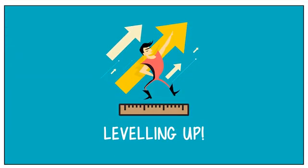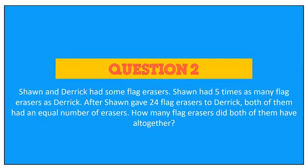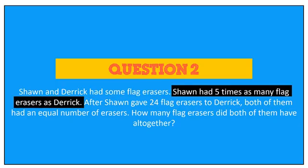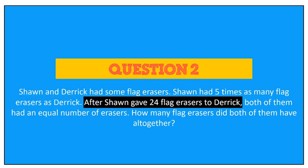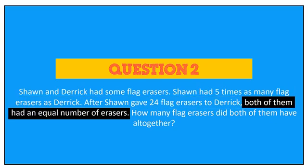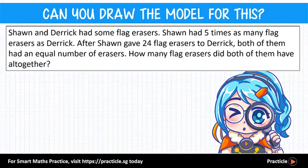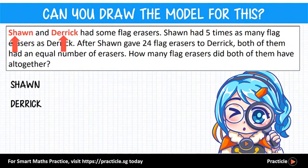Let's try to use the math model method on this next question. This is an example of a question that compares the number of items between two people when one of them decides to share his items with the other. Sean and Derek had some flat erasers. Sean had 5 times as many flat erasers as Derek. After Sean gave 24 flat erasers to Derek, both of them had an equal number of erasers. How many flat erasers did both of them have altogether? Were you able to identify Sean and Derek as the main characters? Great job on the first step!